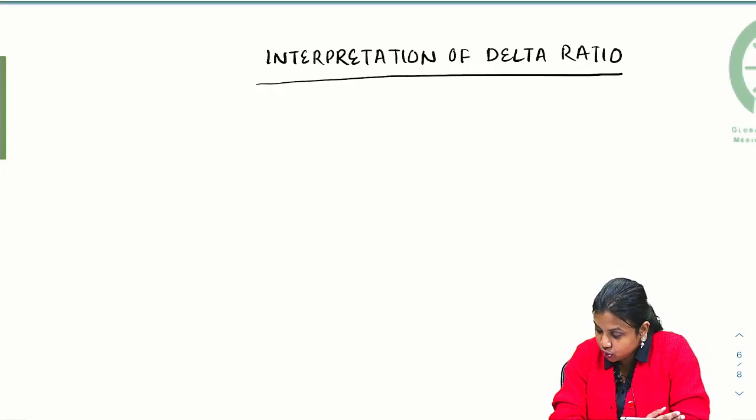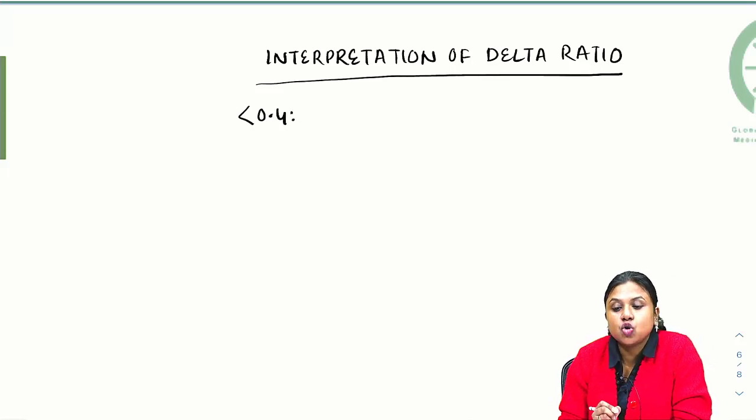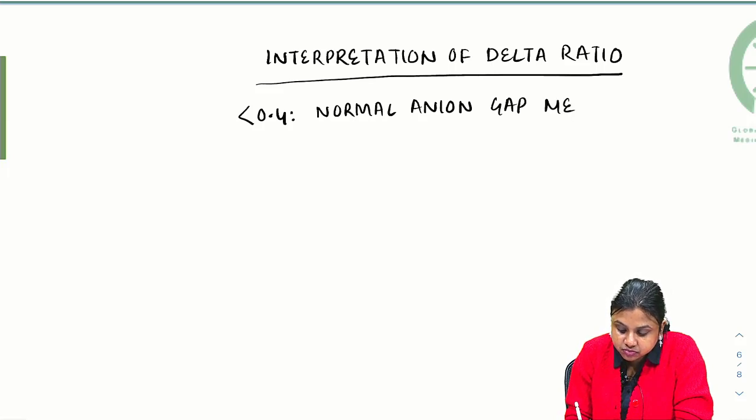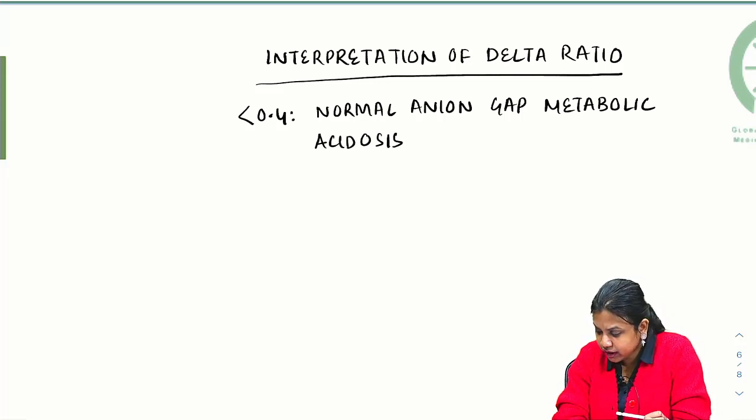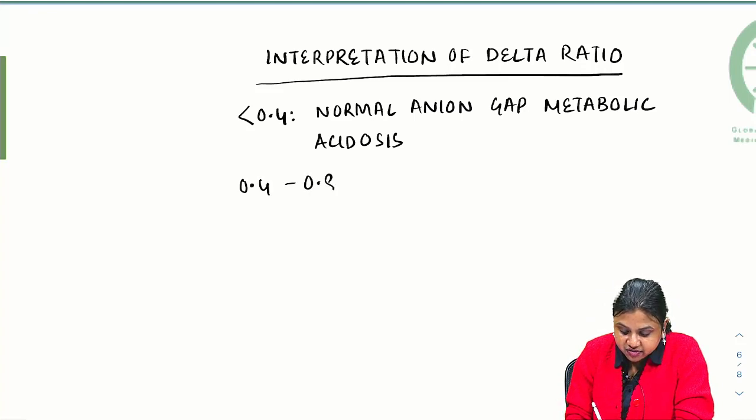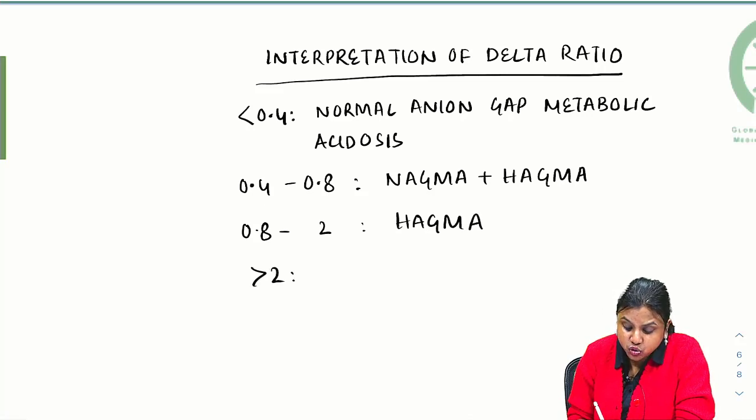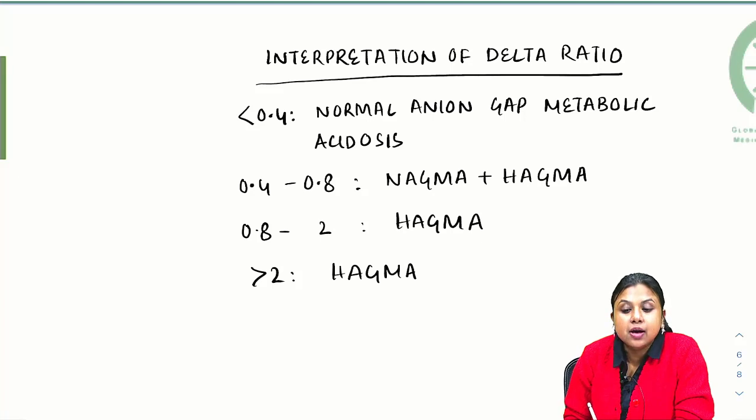Interpretation of delta ratio: if it is less than 0.4, then it is normal anion gap metabolic acidosis. If it is 0.4 to 0.8, then it is NAGMA plus HAGMA. If it is more than 2, then it is high anion gap metabolic acidosis plus metabolic alkalosis.